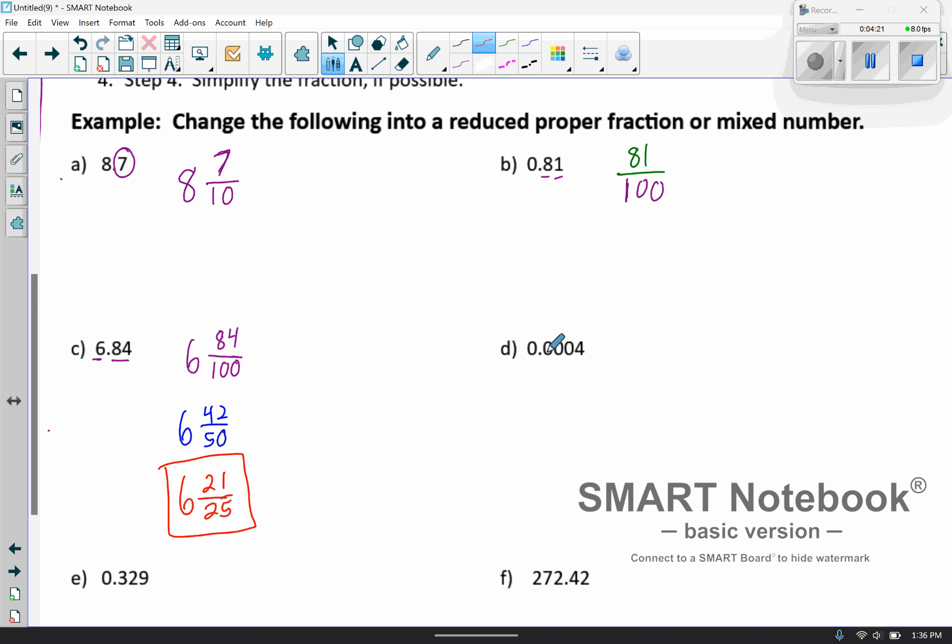Okay, looking at D, we have 0.0004. So we're going to have a proper fraction here. So my numerator is just going to be the 4. And then my denominator is going to be 1 followed by the number of zeros by the number of place values we have here. 1, 2, 3, 4. So 1, 2, 3, 4.